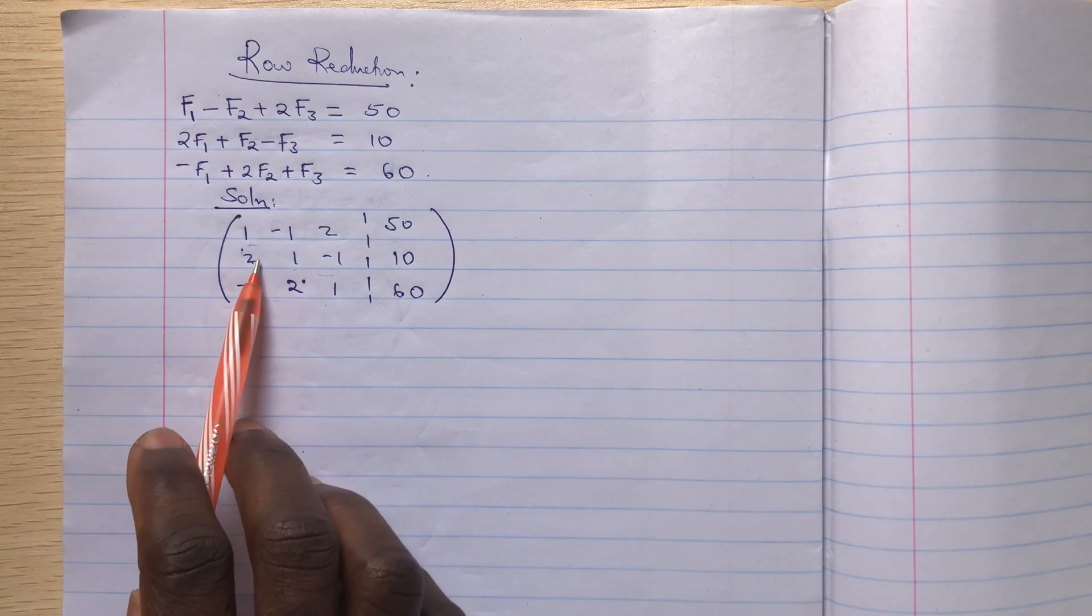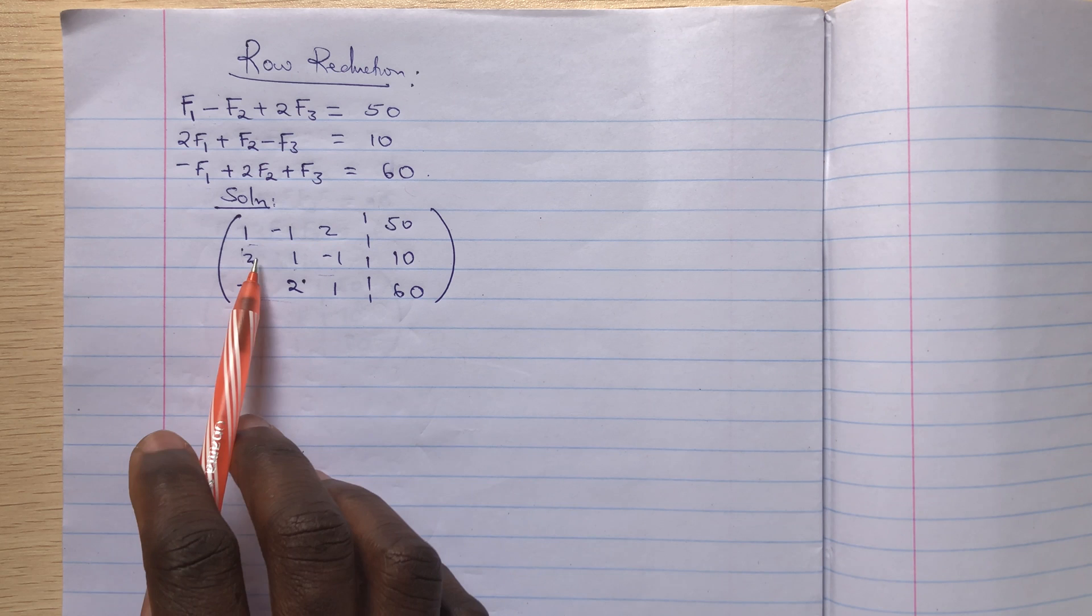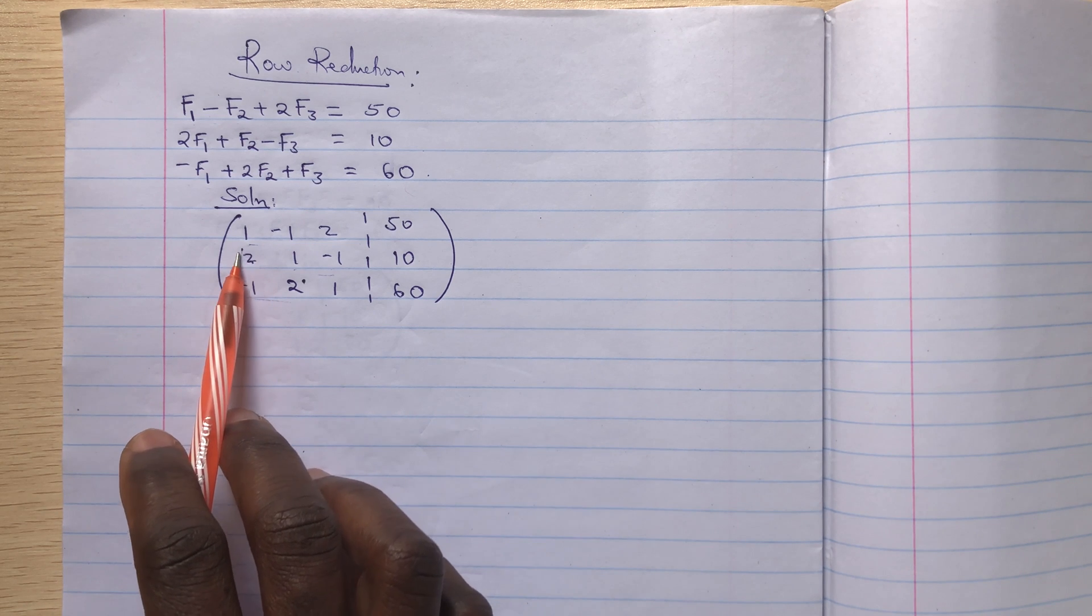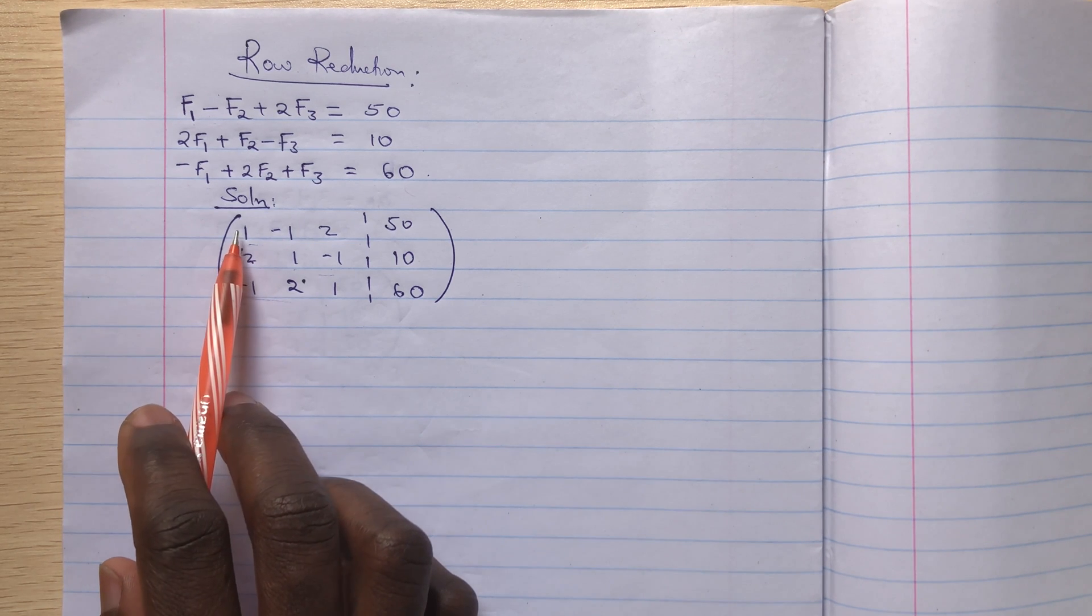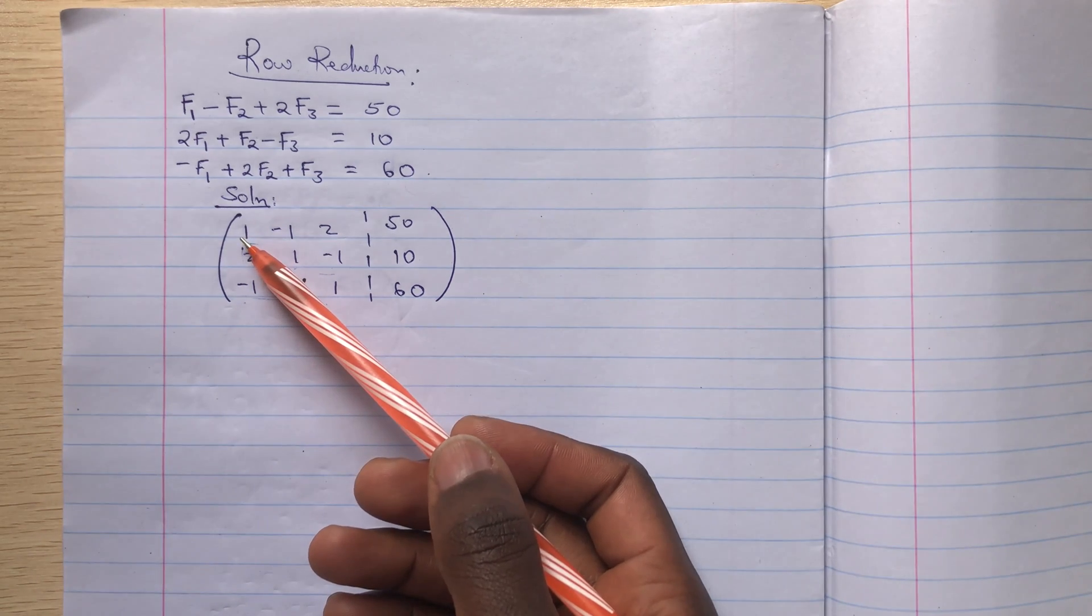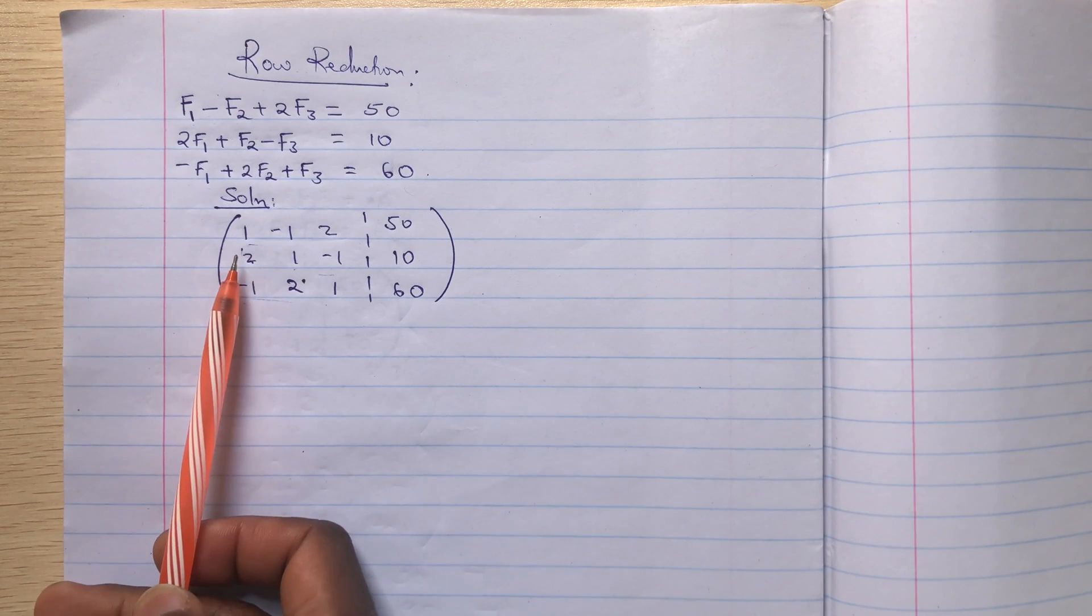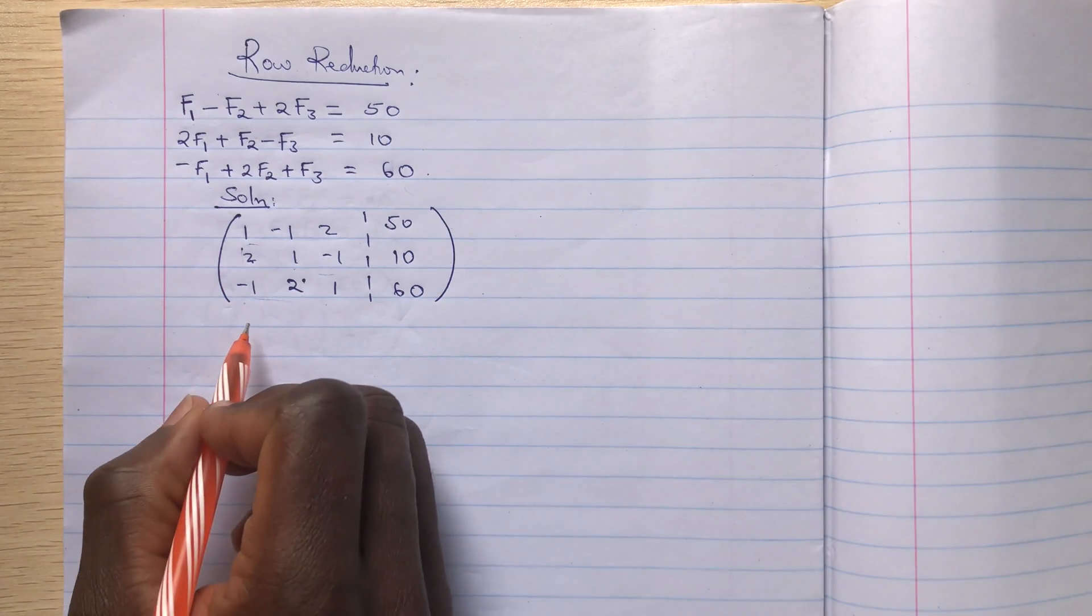So you realize that if you want to eliminate, we'll create zeros here. So if you want to create a zero here, we'll subtract this row from this, but this has a coefficient of two, this has a coefficient of one. That means we'll simply multiply with the coefficients here.